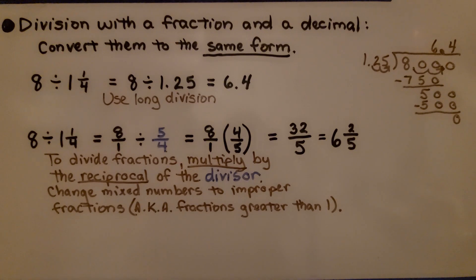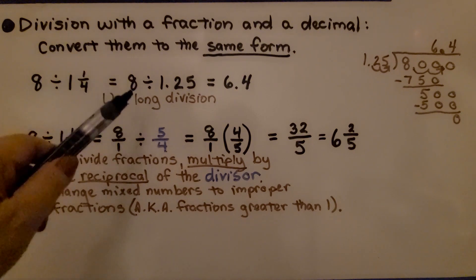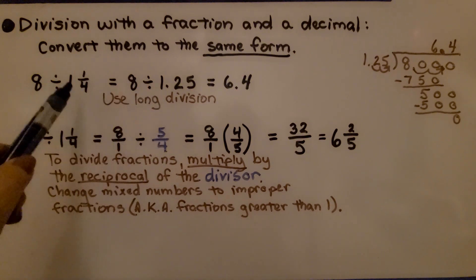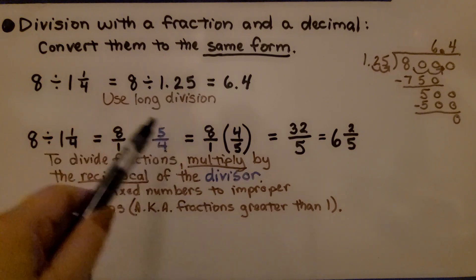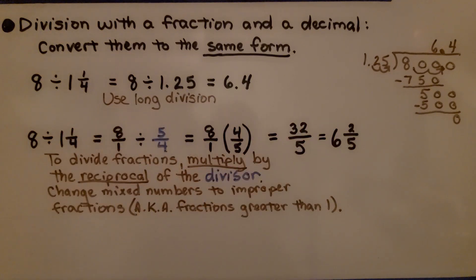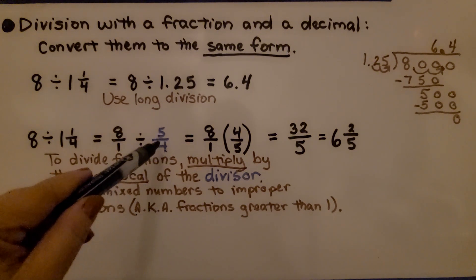Remember, if we have division with a fraction and a decimal, or even multiplication, we need to convert them to the same form. If we have a whole number and a mixed number, we can use long division by converting this mixed number to a decimal and then using long division.